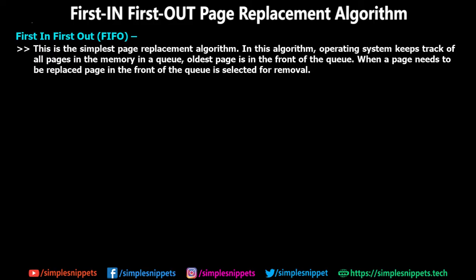Welcome back to another video tutorial by Simple Snippets on operating systems, specifically the memory management part. In this video we are going to understand the working of the First In First Out page replacement algorithm and solve two numericals based on this algorithm. In the previous couple of videos we covered paging, page faults, and why we need page replacement algorithms. If you missed those, check this playlist. I'm assuming you already know what page replacement, paging, and page faults are.